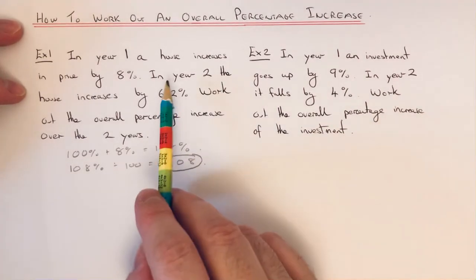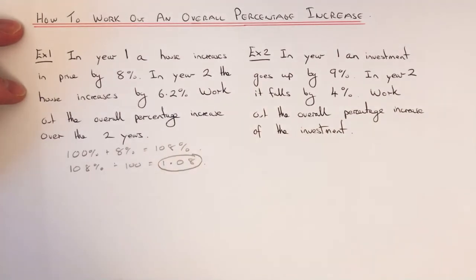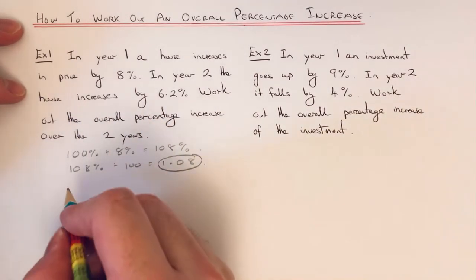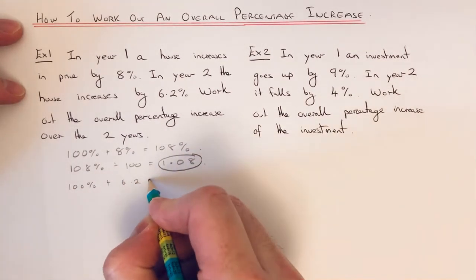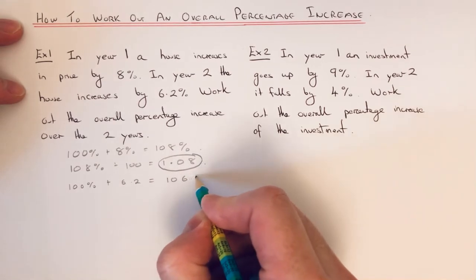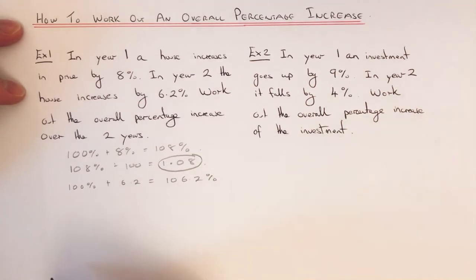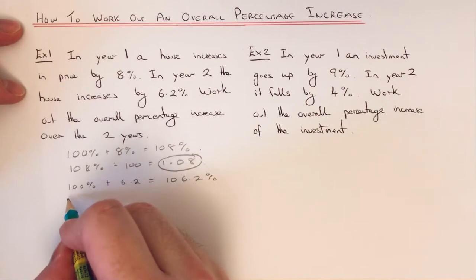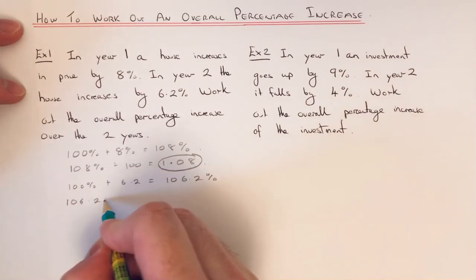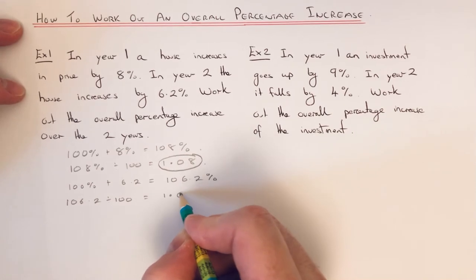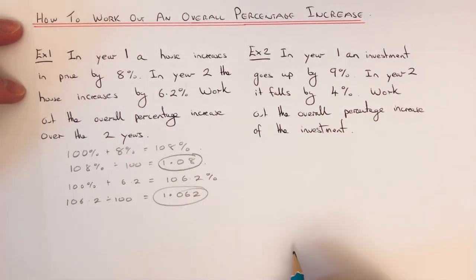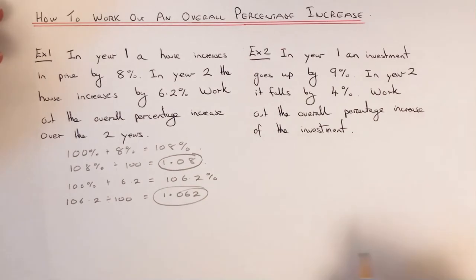In year 2, the house price increases by 6.2%, so again we get a decimal multiplier by adding that to 100, so that's 106.2%. Then divide that by 100 to give a proper decimal, that's 1.062. So we've got decimal multipliers for year 1 and year 2.